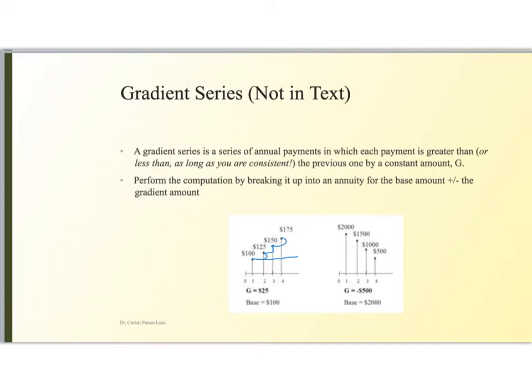In the second example, the base amount, we start with $2,000 every time, but we pay $500 less each time, so the gradient amount is a negative $500.